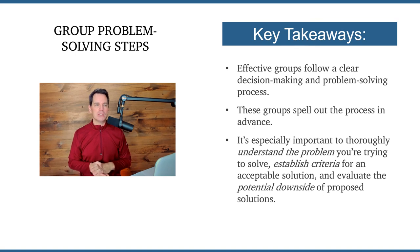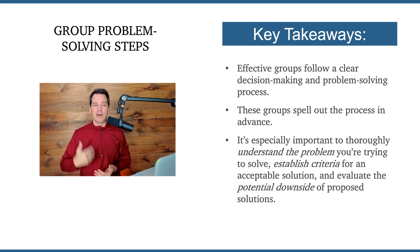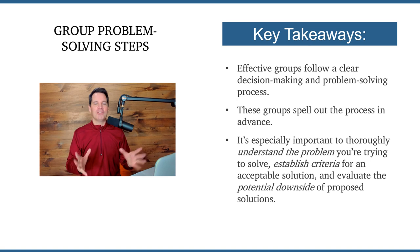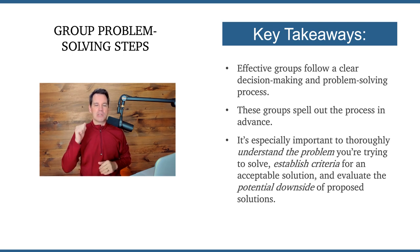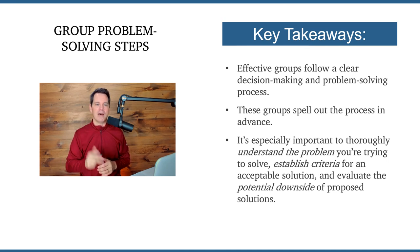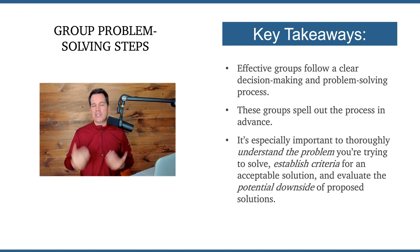Here are some key takeaways. Effective groups follow a decision-making and problem-solving process — they don't just wing it or go with the flow. They spell out that process in advance so everybody understands the roadmap. It's especially important to thoroughly understand the problem you're trying to solve — that's one of the key steps. Establish criteria for an acceptable solution — that's the second key step. And the third key step is to evaluate the potential downside of proposed solutions, which will prevent bad solutions from advancing in the process.